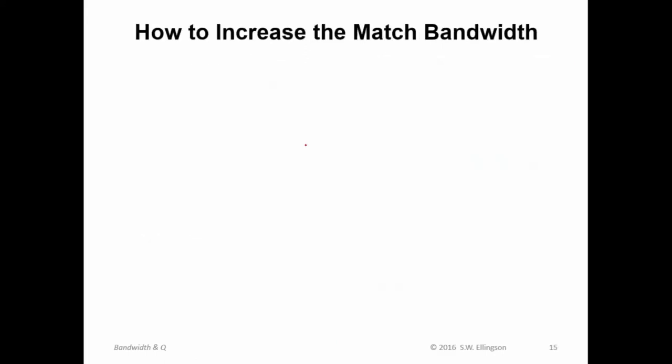Okay. How to increase match bandwidth. Well, now we have seen that since bandwidth is inversely proportional to Q, obviously, one way we can increase the bandwidth of an impedance match is to decrease Q. That means decreasing the ratio of energy stored to power escaping. So how can we go about doing that?